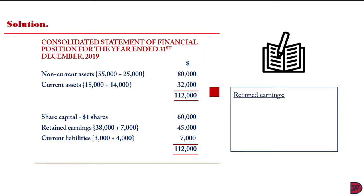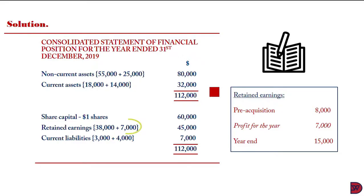Now let's look at how the retained earnings figure was arrived at. The question told us that before P acquired S, their profit was $8,000. We then look at the retained earnings at the end of the year for the subsidiary, which was $15,000. So if pre-acquisition profit was $8,000 and the total is now $15,000, the difference gives us the post-acquisition profit for the year, which is $7,000. We add that to the parent's retained earnings of $38,000 to arrive at $45,000.